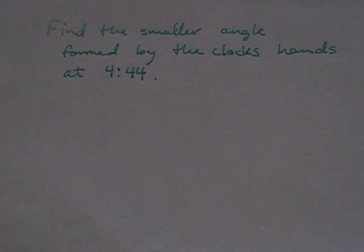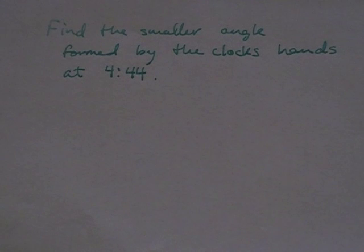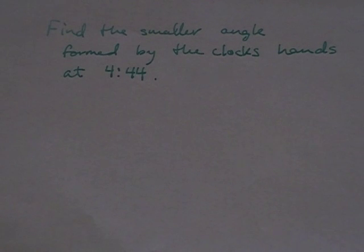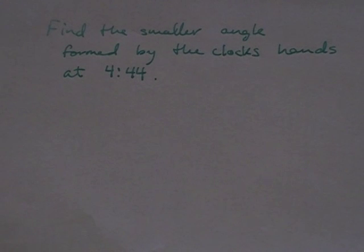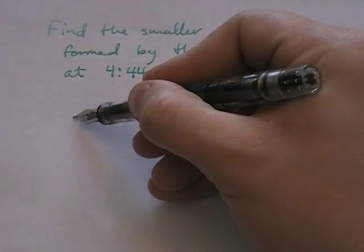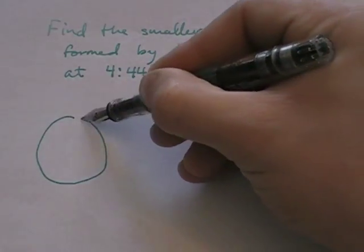We've been asked to find the smaller angle formed by the clock's hands at 4:44 — this could be a.m. or p.m., it doesn't matter on an analog watch. This is a classic trigonometry problem and a great one for working on thinking skills. Trigonometry is a very visual subject, so the first thing I like to do is draw a picture.